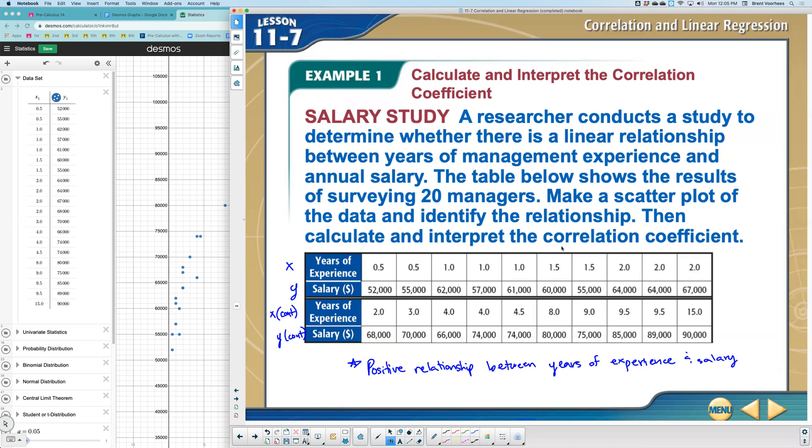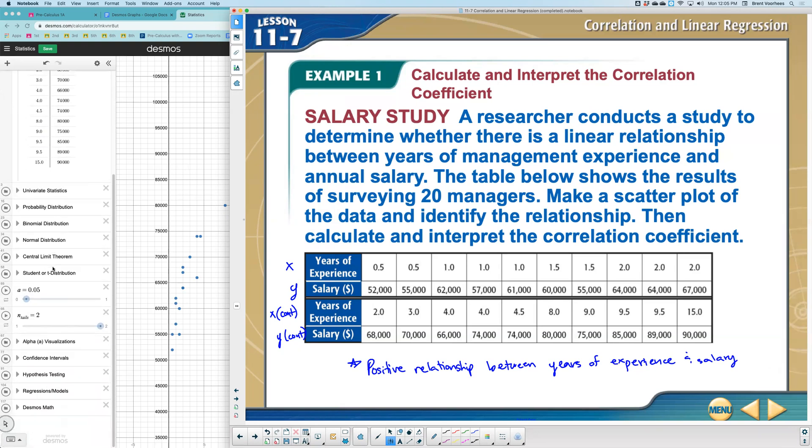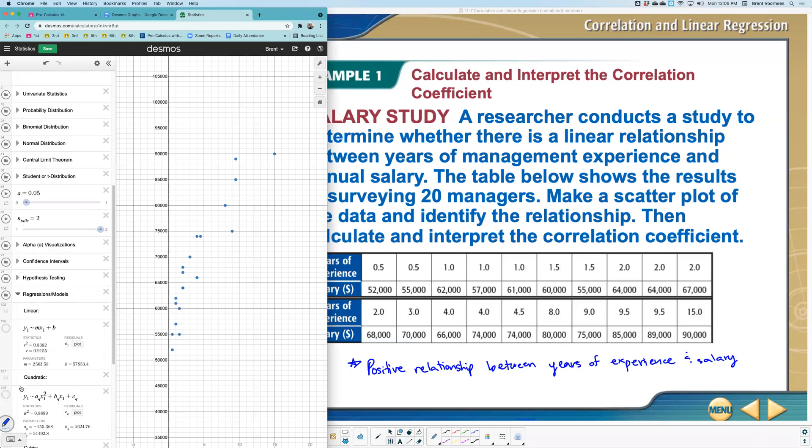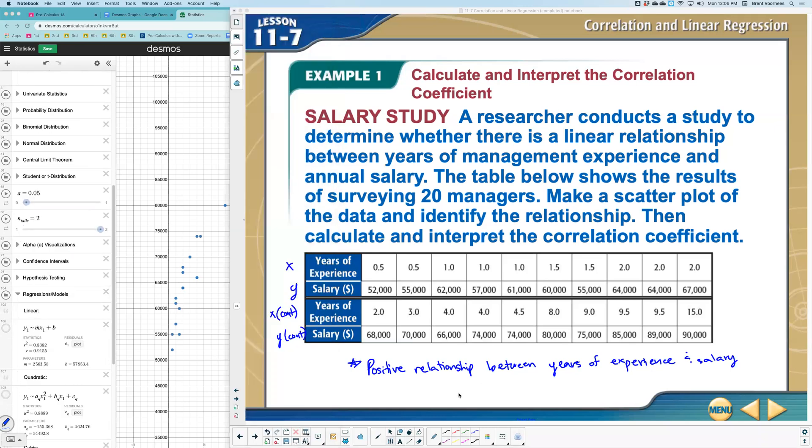It says then calculate, interpret the correlation coefficient. So how do you do that? Well, if you scroll all the way down here to the bottom and you go to regression models, you will see that in here we have the values that we need. Okay. So it says calculate and interpret the correlation coefficient. That's the R value. So in this particular problem, the R value, according to the calculator, R equals, and it's that 0.9155.